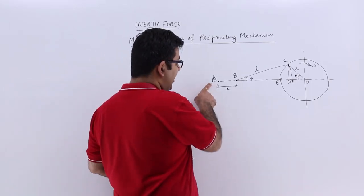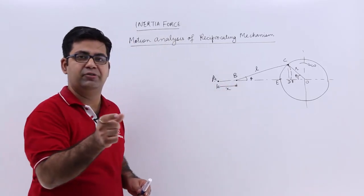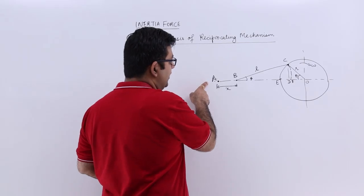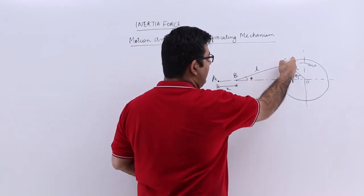So A and B are two points of the piston. Initially the piston was at A and your crank pin was at E.